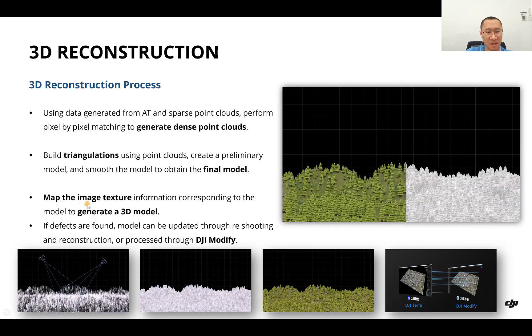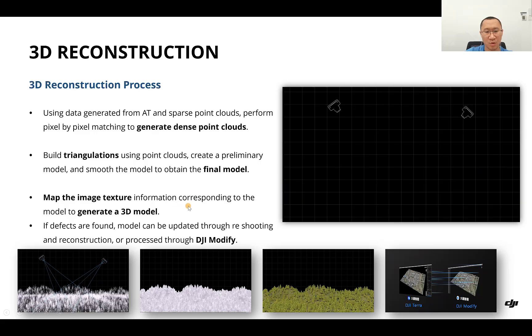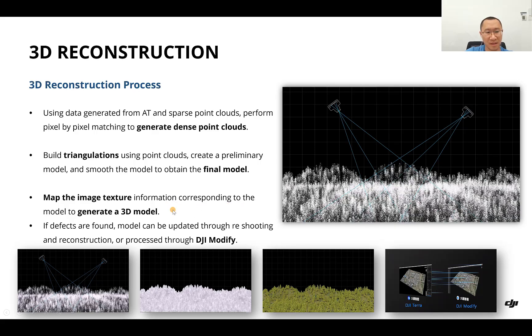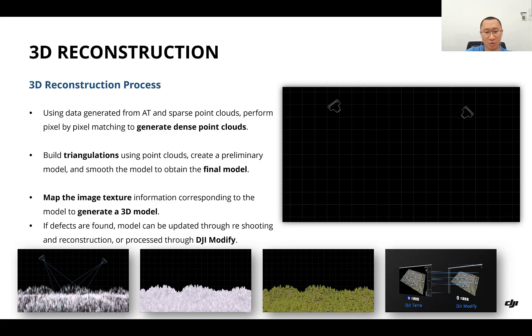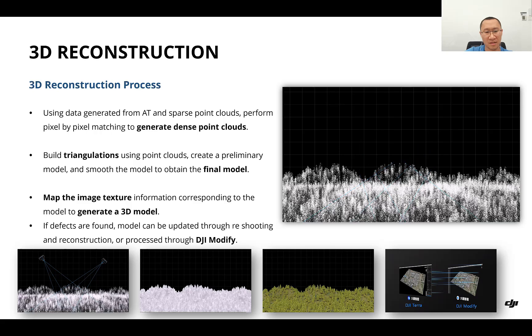Then we map the image texture information corresponding to the model to generate a 3D model. If defects are found, the model can be updated by reshooting and reconstruction or processed with DJI Modify.